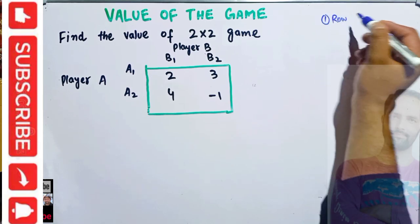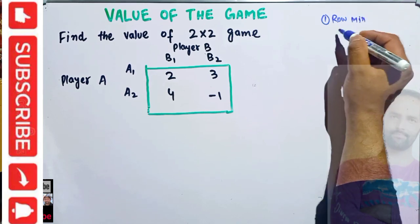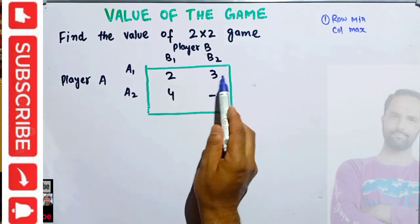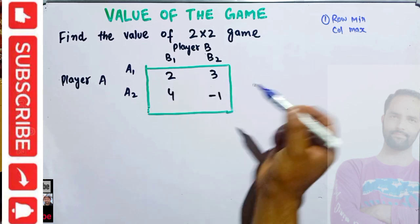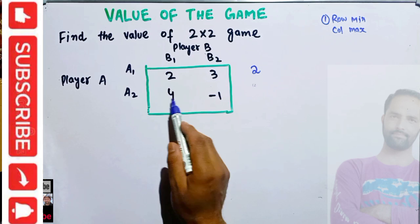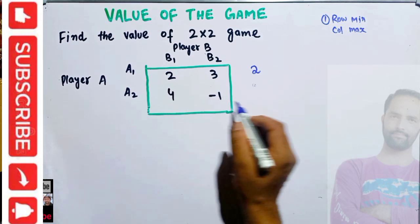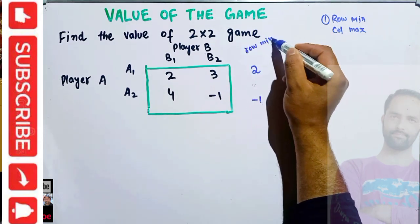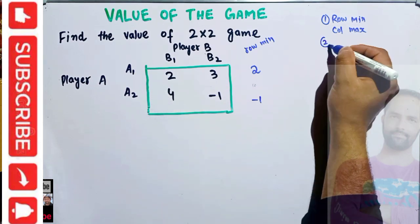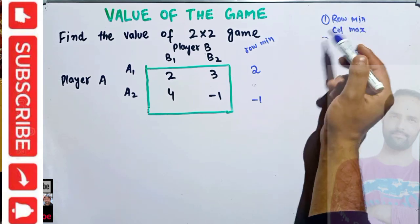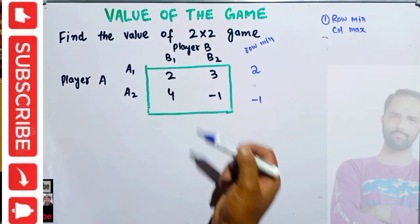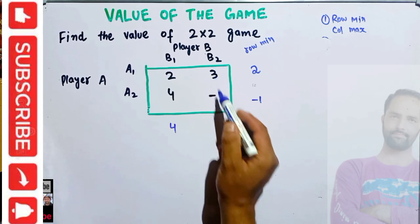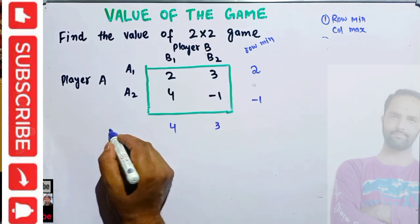The first step is to find the row minimum and column maximum. In the first row, the smallest element between 2 and 3 is 2, so we write 2 here. In the second row, the smallest number is minus 1. This gives us the row minimum. For the column side, we find the maximum values: the maximum between 4 and 2 is 4, and the maximum between 3 and minus 1 is 3. This is the column maximum.